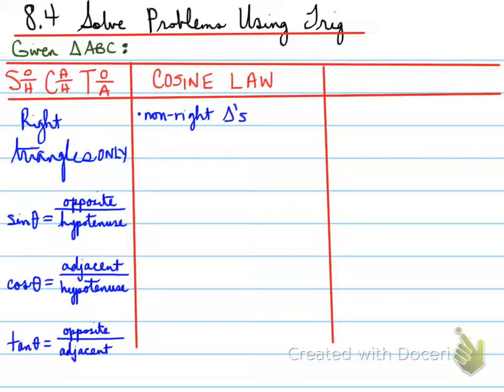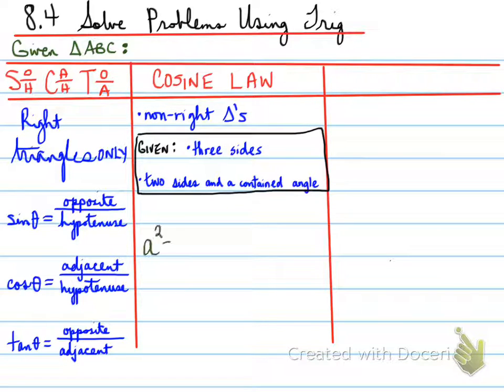Now cosine law is used for non-right triangles. You must be given the following: either three sides, so all three sides are known, or two sides and a contained angle. If you're given two sides and a contained angle, or three sides altogether, you can use, that's right, cosine law.